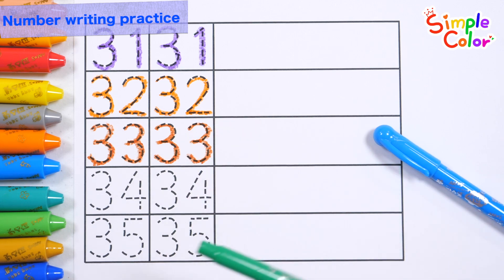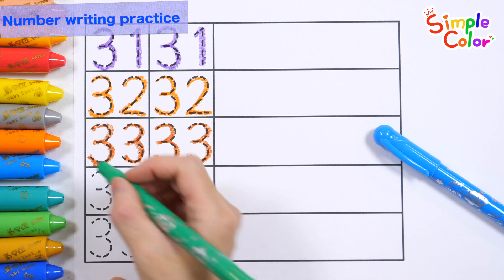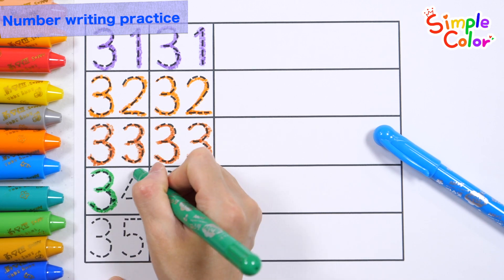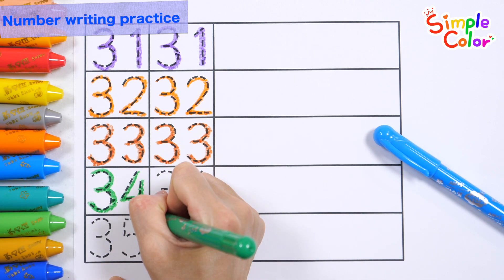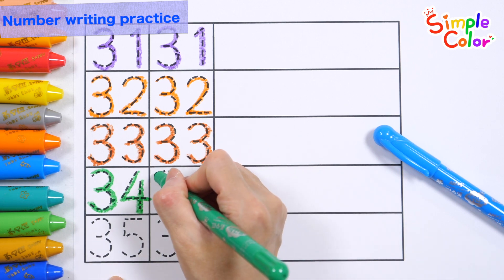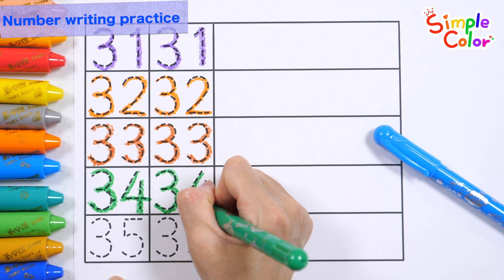Write along the dotted lines with a green pencil and read it. 34, 34.